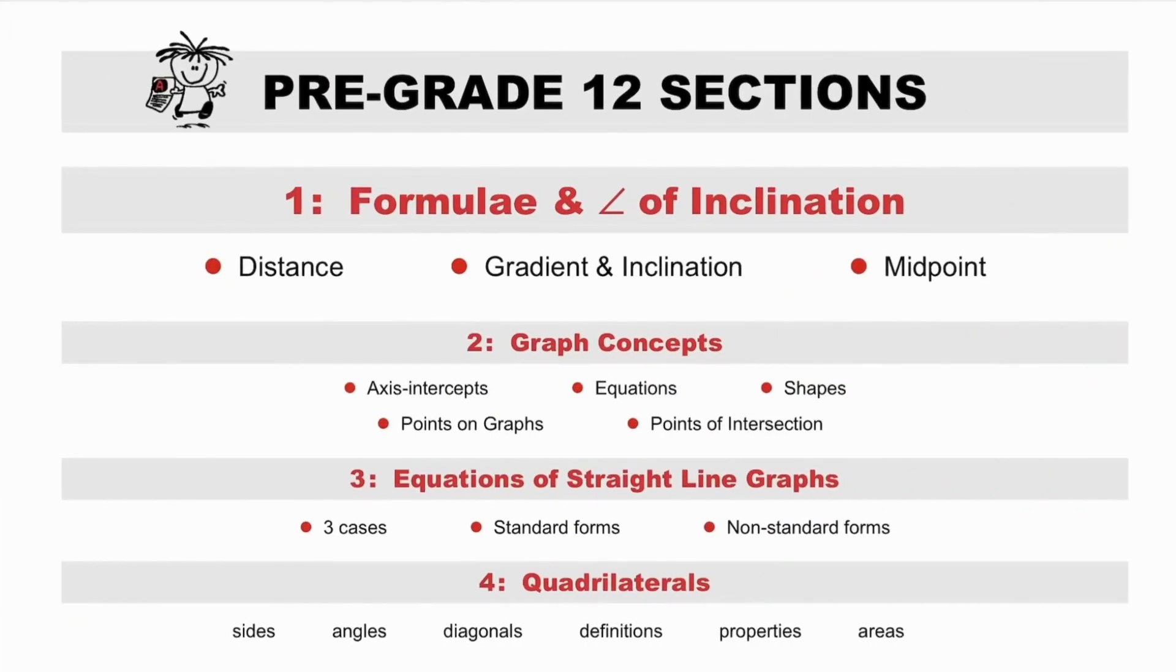You probably know the formulae - distance, gradient and midpoint - but can you derive them? Only when you understand the why will you be able to apply formulae effectively. Related to gradient is inclination, sometimes referred to as the angle of inclination. The other three pre-grade 12 sections are graph concepts, equations of straight line graphs and quadrilaterals.